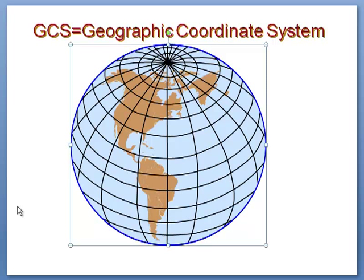The easiest way to remember latitude is that it's analogous to a ladder — as we go up and down, we're going up the ladder. Longitude is east or west of the prime meridian, which is zero degrees, and it goes from the North Pole to the South Pole, passing through Greenwich, England.